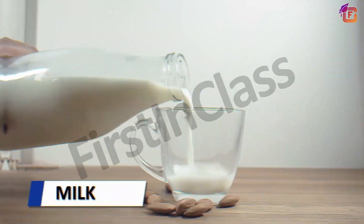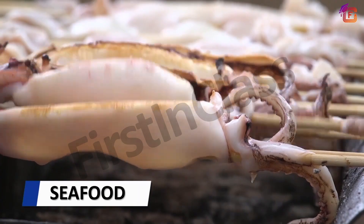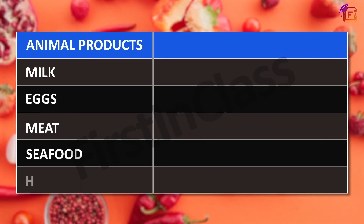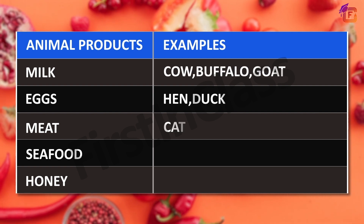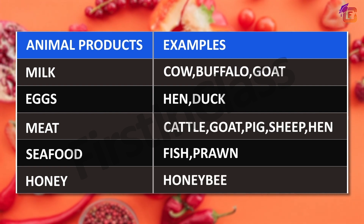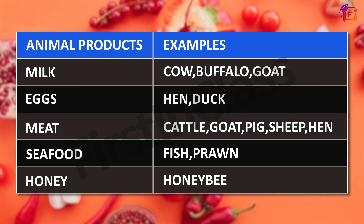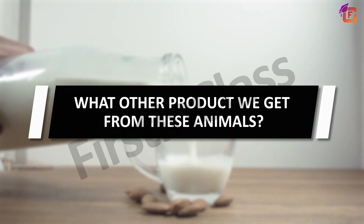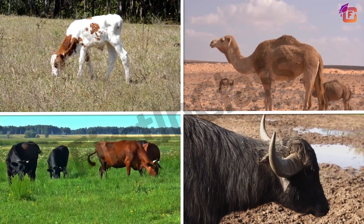Hello learners, welcome to the video. In one of the previous videos we learned that animals provide us milk, meat, seafood and honey. If I ask you the name of the animals from which we get these foods, most of you will answer with examples. Would you like to learn new examples of some of these products, or what other products we get from these animals? Let us know about them in this video.